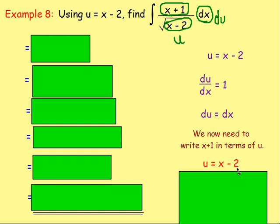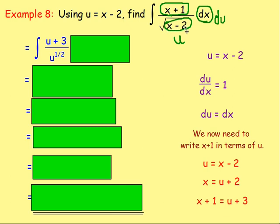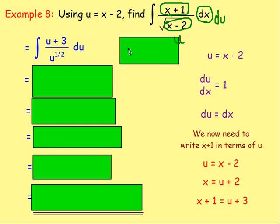Getting x on its own by adding 2 to both sides: x equals u plus 2. Then to get x plus 1, just add 1 to both sides, so x plus 1 equals u plus 3. From there, rewriting: x plus 1 is equal to u plus 3; the square root of x take away 2, where u was x take away 2, is the square root of u, which means to the power of a half; and dx was du. Make sure when you've done this that everything is in terms of u.